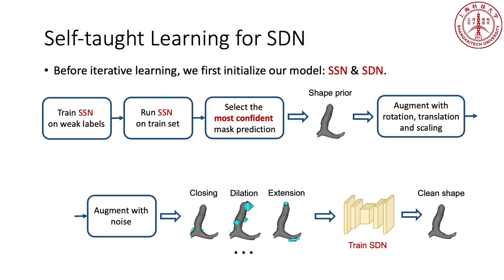The intuition is that our SSN learns good enough semantics from weak labels, and the most confident mask prediction is the best generalization of SSN, which has better shape quality than other masks. We then augment the selected mask with rotation, translation, and scaling to form a shape manifold covering the variety of this object. Finally, we augment the transformed masks with noise as input and train SDN to output the clean masks.